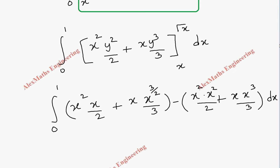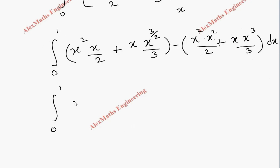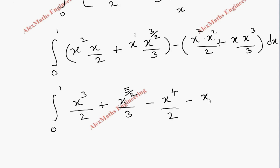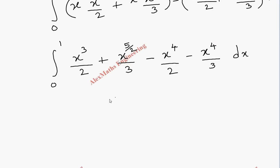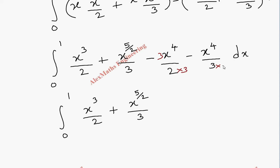Let's simplify further. Integral 0 to 1: this gives x³/2 plus x^(5/2)/3, then minus x⁴/2, minus x⁴/3, into dx. The last two terms can be combined: making a common denominator of 6, we get (3 minus 2) = minus 5x⁴/6. So the expression becomes x³/2 + x^(5/2)/3 − 5x⁴/6, dx.